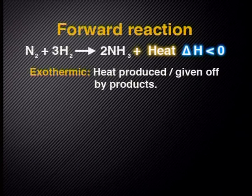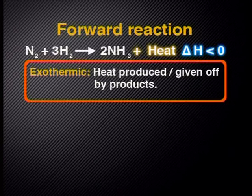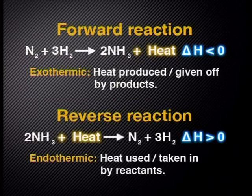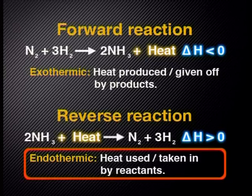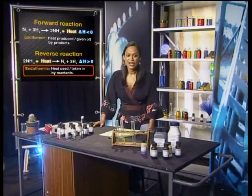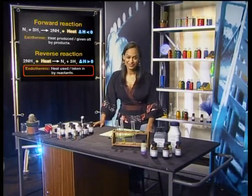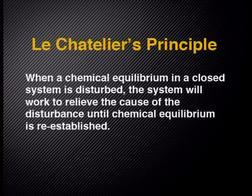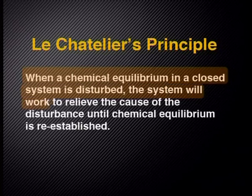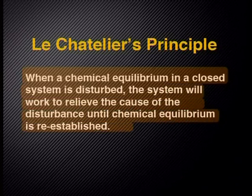Here we see the forward reaction, which is exothermic — heat is produced or given off by the products. The reverse reaction is endothermic, which means heat is used or taken in by the reactants. We can now look at how a change in temperature affects a chemical equilibrium. Bear in mind, Le Chatelier's principle says: when a chemical equilibrium in a closed system is disturbed, the system will work to relieve the cause of the disturbance until chemical equilibrium is re-established.